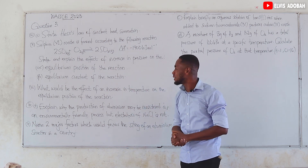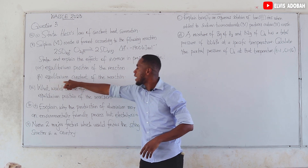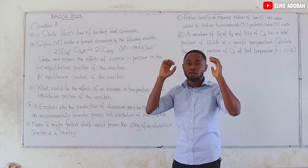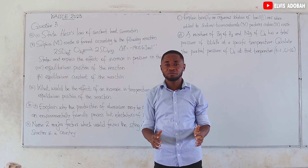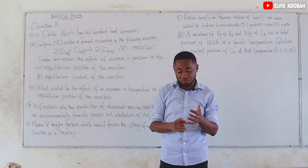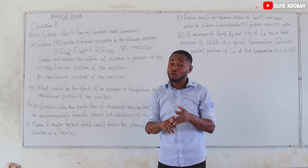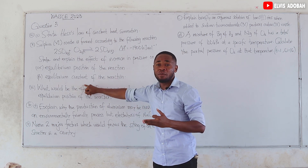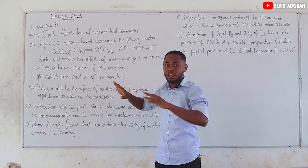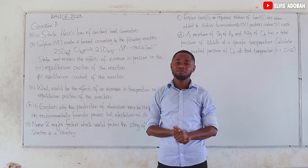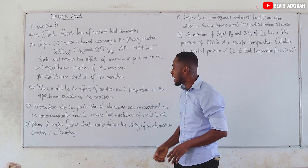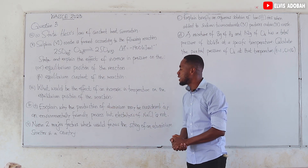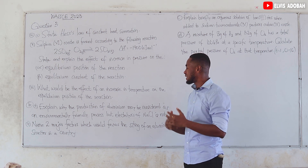For (beta), the effect of increased pressure on the equilibrium constant: apart from temperature, factors such as concentration, pressure, and volume have no effect on the equilibrium constant. So there is no effect on the equilibrium constant.